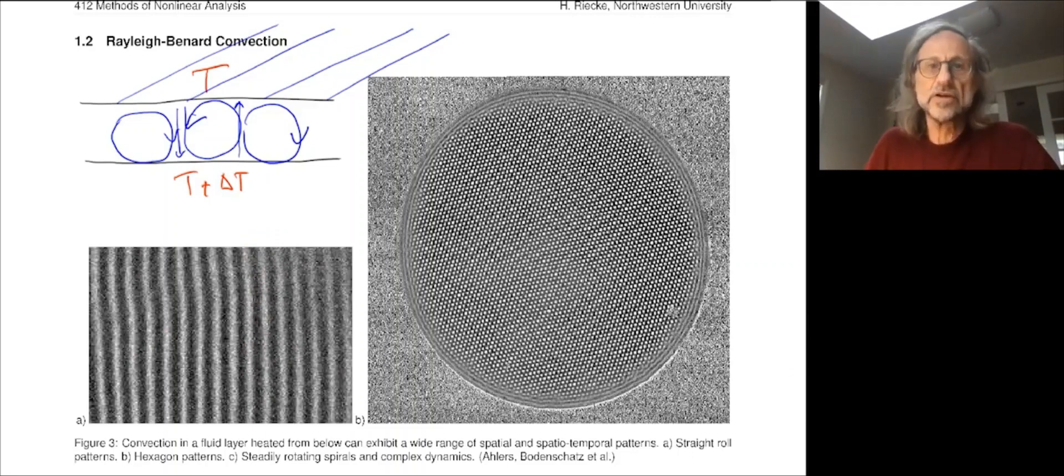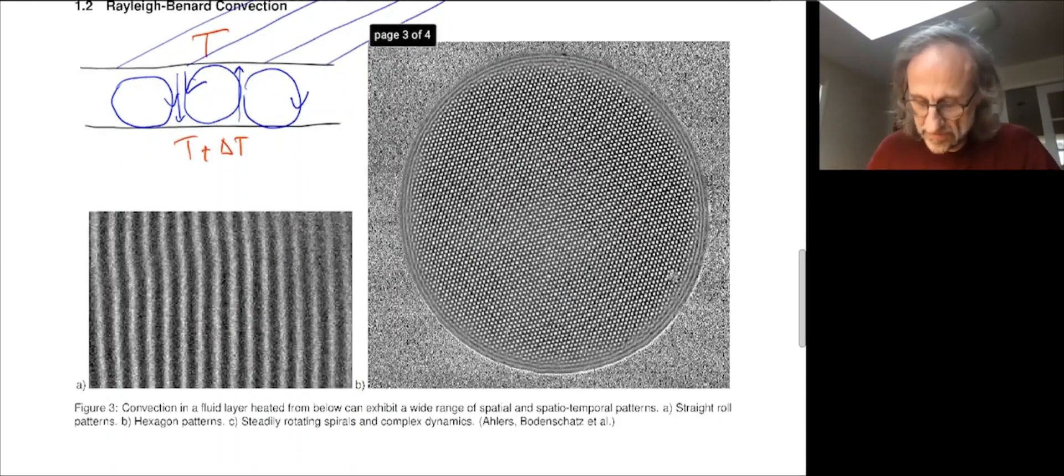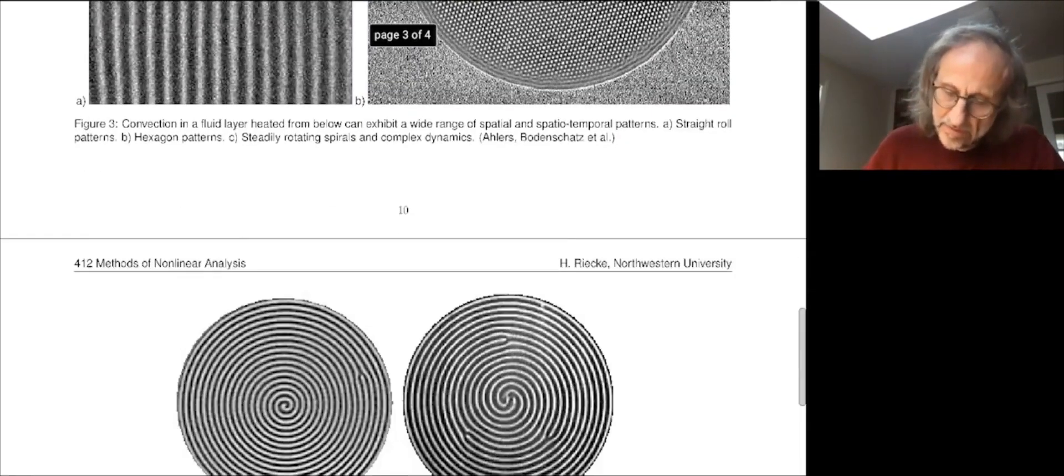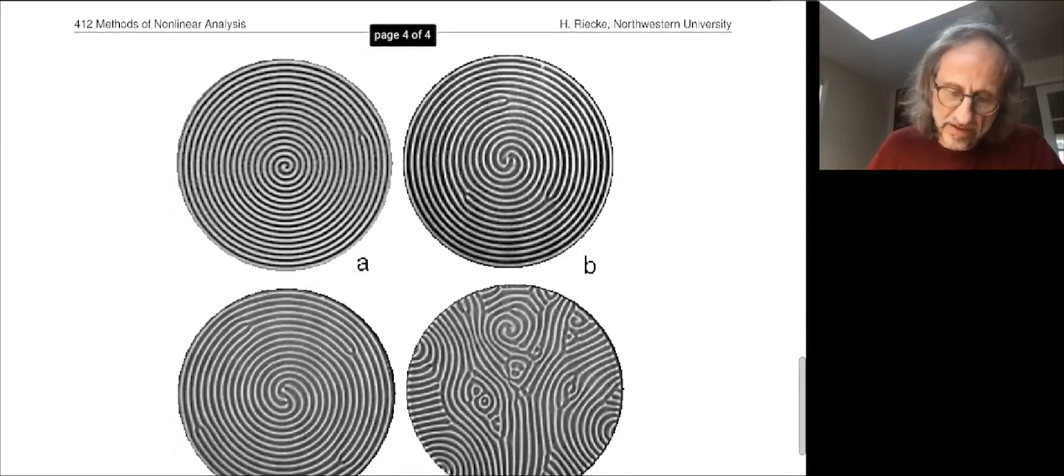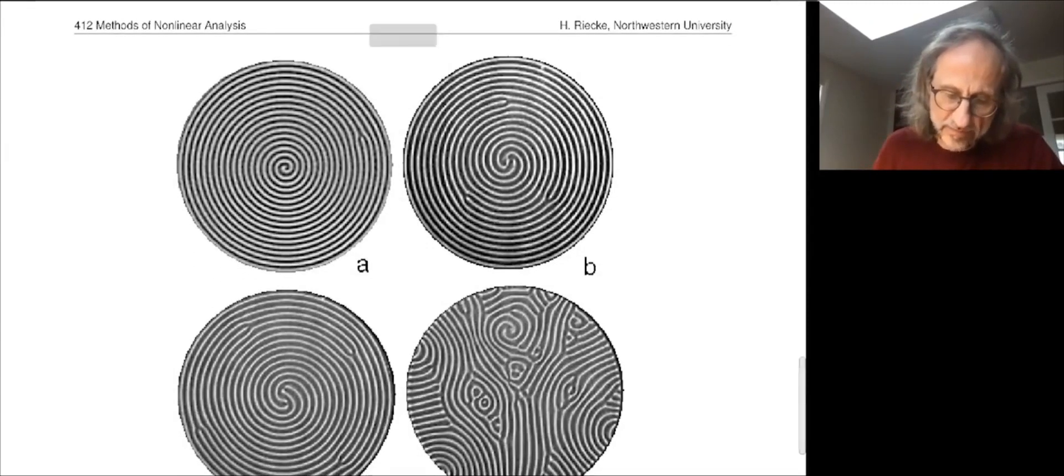If you change parameters, then instead of having these nice ordered stripes, you get this hexagonal pattern with an interesting transition, which we will investigate. And under other situations, you can also have stripes, but they actually form a spiral, or maybe spirals with multiple arms and defects.